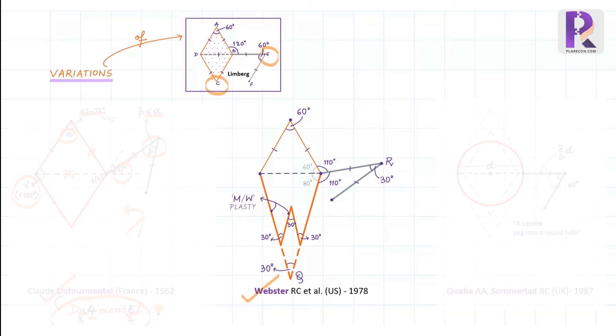Webster modified the angles at both these points from 60 degrees to 30 degrees, so that dog ear formation is least and there is balance of tension around the flap. However, by decreasing the defect angle at the base of the flap, the length of the defect and the final suture line increased substantially.